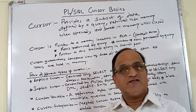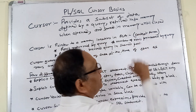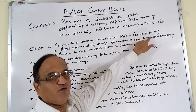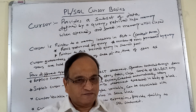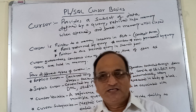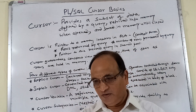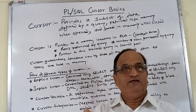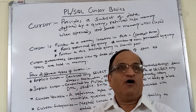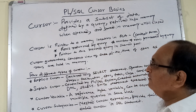But that is not actually the definition of the cursor. A cursor is formally defined as a pointer to the context area. Context areas can be different in different applications — in MS Word, the context area is the place in memory where the current editing or insertion of text occurs. On the desktop, when you click an icon, the context area is where it works to open that application. So the context area in PL/SQL is somewhat different.